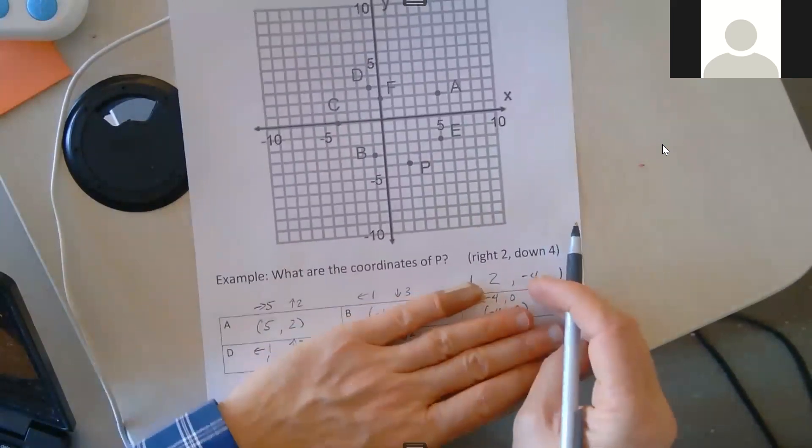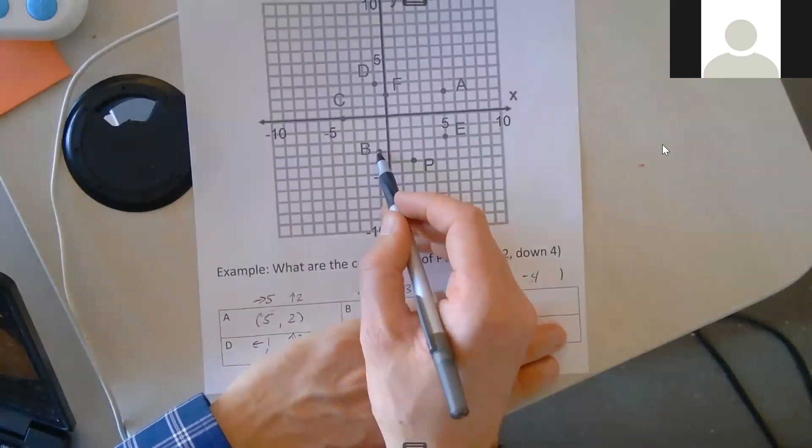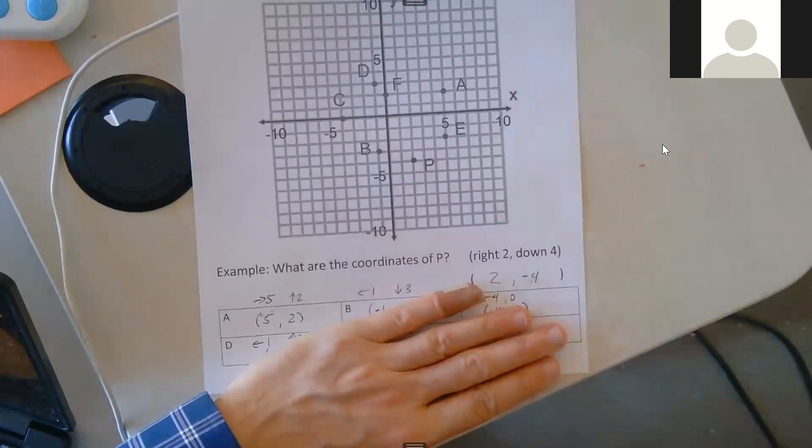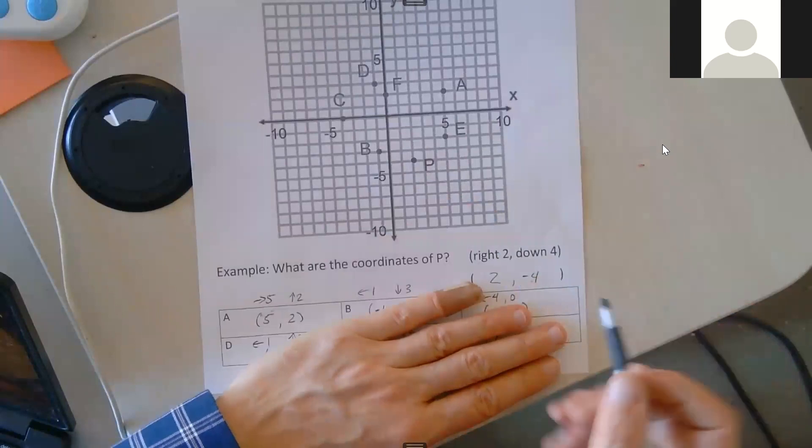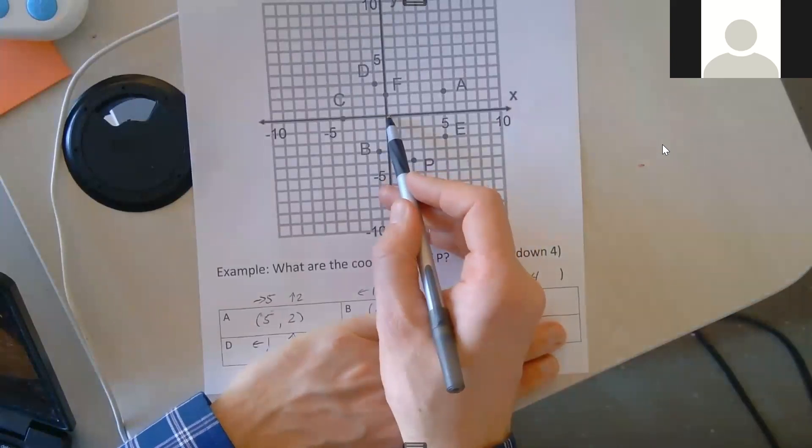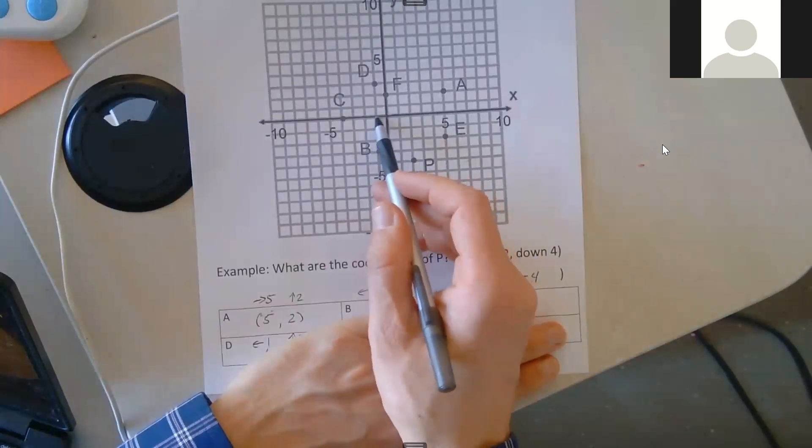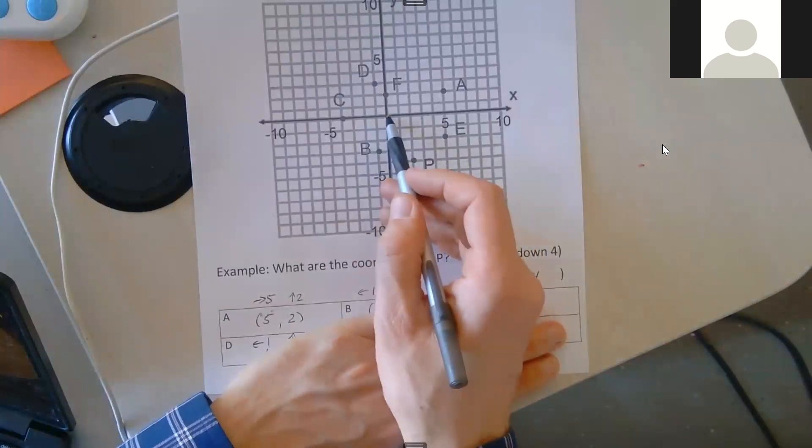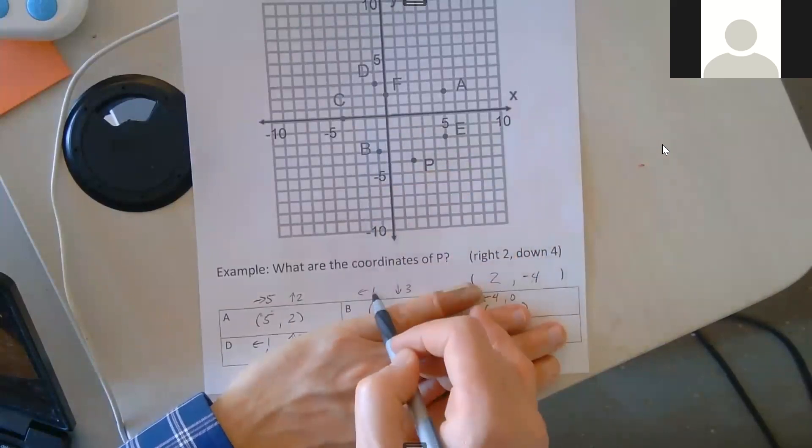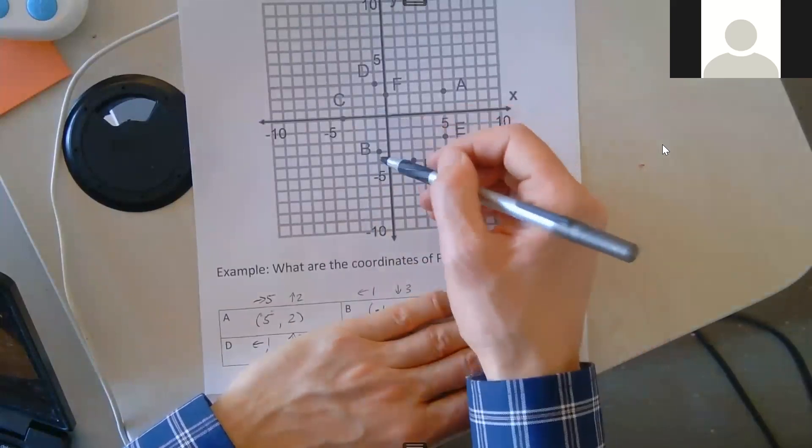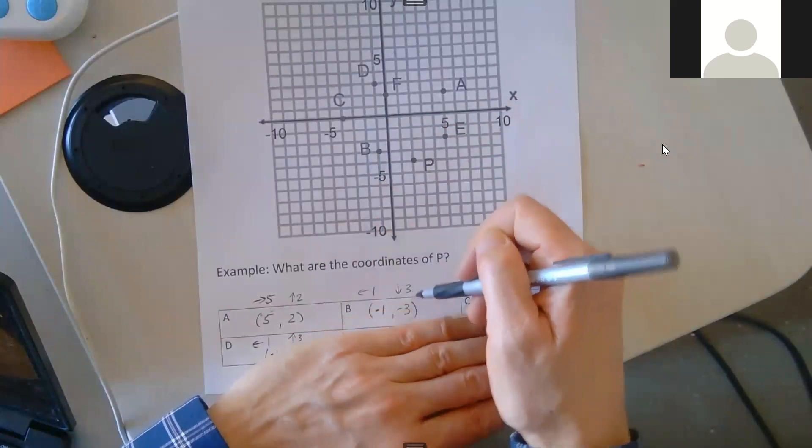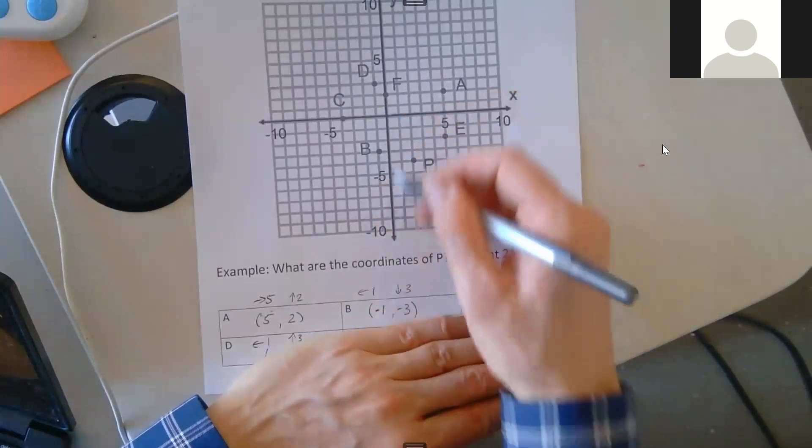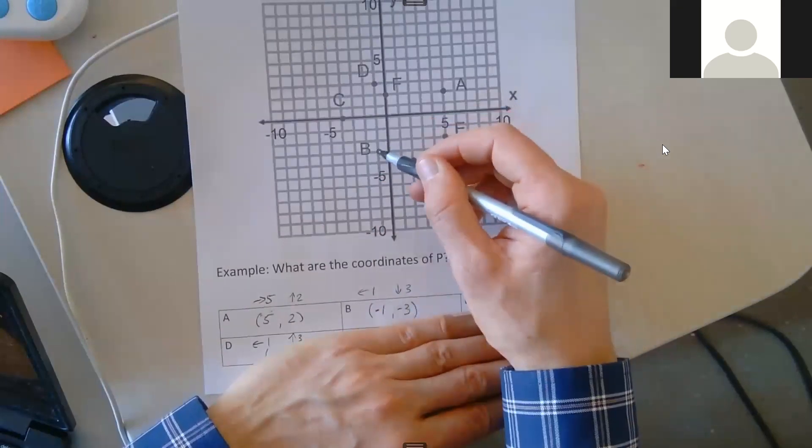Okay, let's say that I wanted to write B. For B, do I need to go left or right? Call it out. To get to B, do I need to go left or right? It needs to be to the left, and then up or down? Down. Okay, so how far left? Left one. Then down three. Down three. So left one is negative one, down three is negative three.